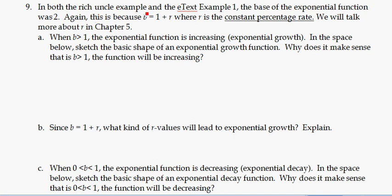In both the rich uncle and etext examples, we had an exponential function whose base was 2 — a doubling function. Remember that the base b equals 1 plus the constant percentage rate r, where r is written as a decimal. When the base is greater than 1, like 2 in our example, the exponential function is increasing — we have exponential growth.